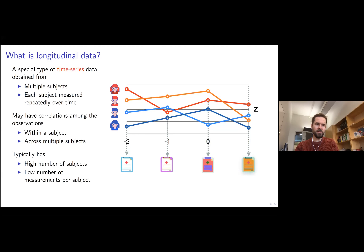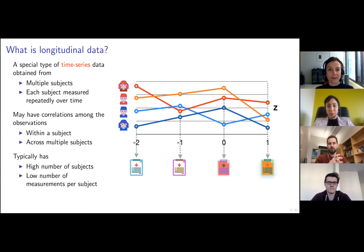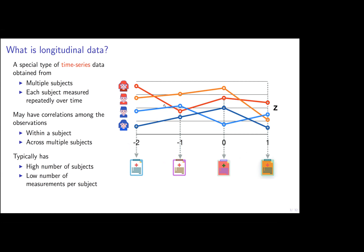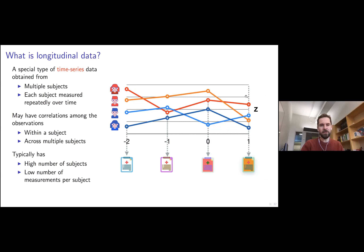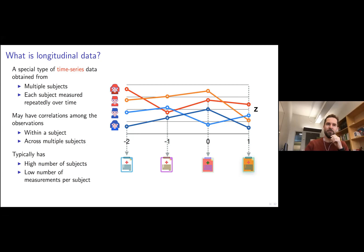So let's start with a brief introduction. What is longitudinal data? It's a special type of time series data obtained from multiple subjects or individuals, where each subject is measured repeatedly over time. The measurements may have correlations within each subject and also across multiple subjects. Typically the data has a relatively high number of individuals and a relatively low number of measurements per subject. This is common in biomedicine, psychology, sociology, and consumer behavior studies.